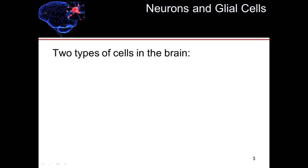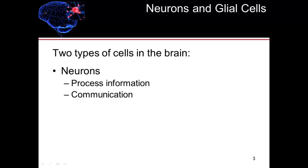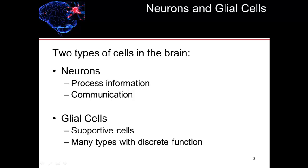There are two major types of cells in the brain: neurons and glial cells. The neurons process information and communicate with one another. They are very important in our ability to contract our muscles and to feel sensory input. Some individuals call the neurons the functional cells within the brain. Glial cells are supportive cells. They allow the neurons to communicate, and there are many types of glial cells, each with a different or very discrete function.